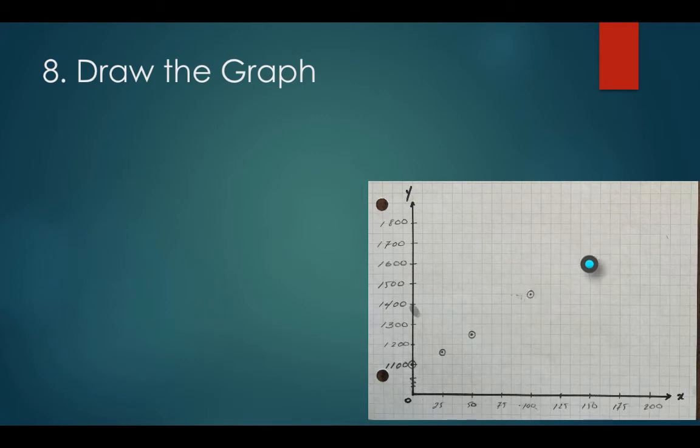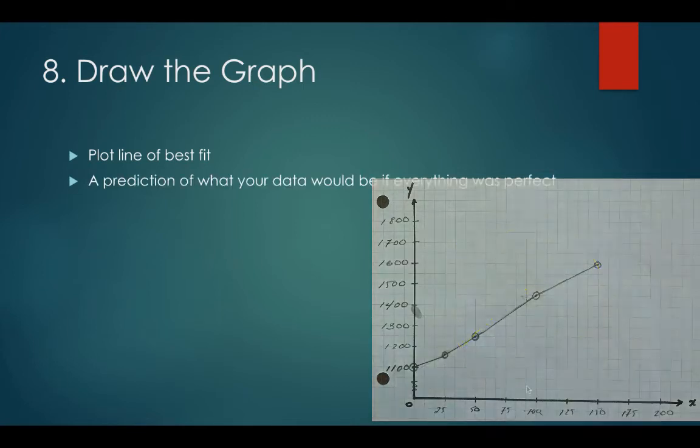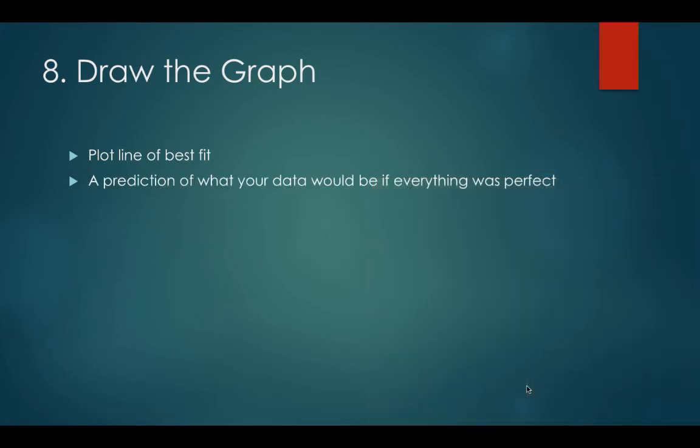Now that we've plotted our points, we're going to draw a line. Most people would like to draw a straight line connecting the dots, but in physics, and in most sciences for that matter, we're going to draw a line of best fit. Now the line of best fit is a prediction of what your data would be if everything was perfect.